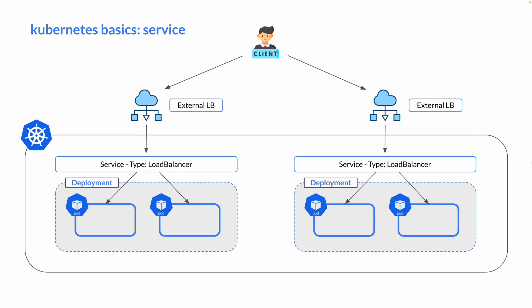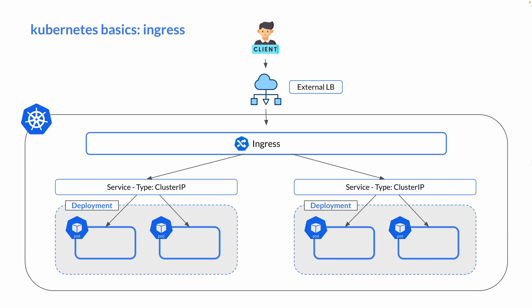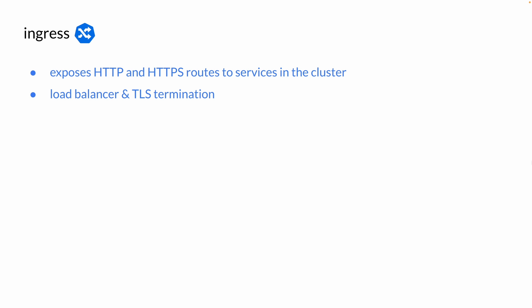When you create more services of load balancer types, that's going to create a dedicated load balancer for each of the service. So a better practice is to create an ingress that defines routing rules to different services based on domains or paths. The ingress essentially load balances your traffic and handles TLS termination, meaning it enables HTTPS traffic to your cluster.